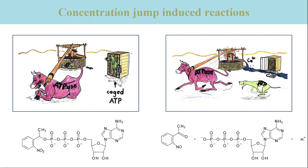Two methods to add compounds to a protein sample have been mentioned already: the stopped flow and the ATR techniques. A third method is the release of biologically relevant compounds from photolabile derivatives. These so-called caged compounds are designed to be biologically silent in the dark, which means that they do not interact with the protein of interest, but cleave off a biologically active compound upon UV illumination.